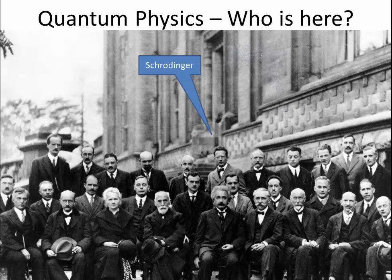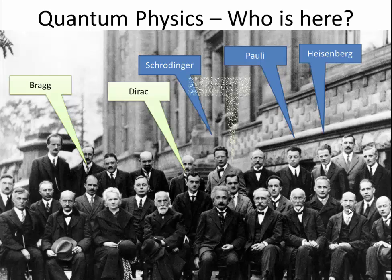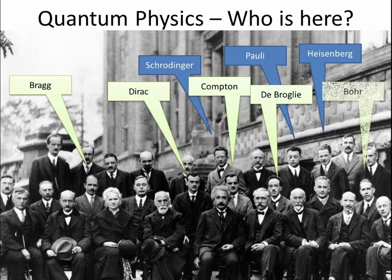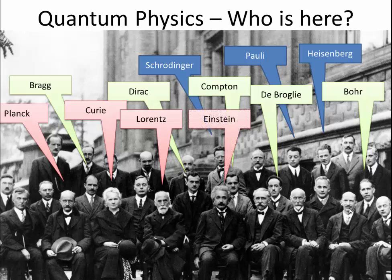Schrödinger, very famous. Pauli, Heisenberg, famous for his uncertainty principle. Bragg, to do X-ray interaction. Dirac, Compton discovered the neutron. De Broglie looked at how electrons behave like waves. Bohr came up with a new model of the atom. Planck did research into the energy of radiation. Curie needs no introduction. Lorentz, and this gentleman needs no introduction either.